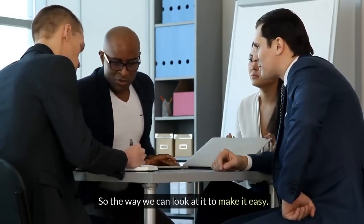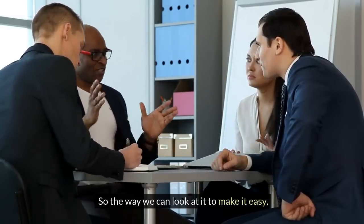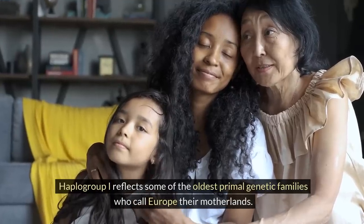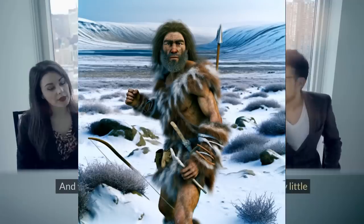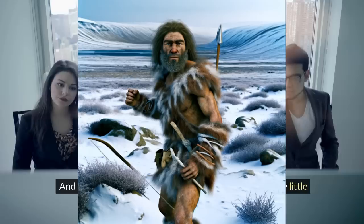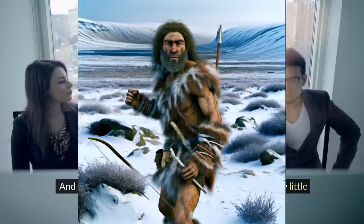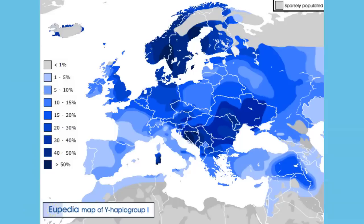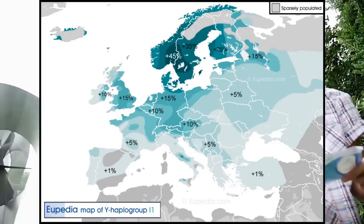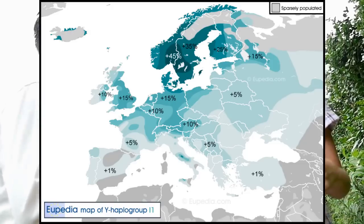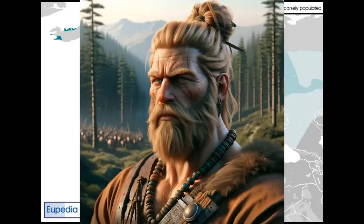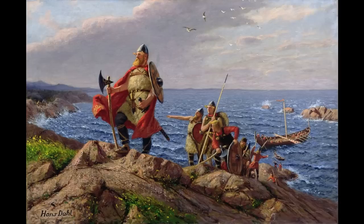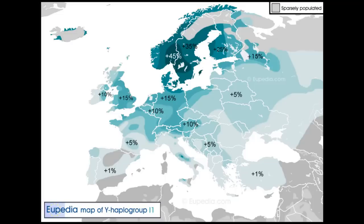To put it simply: haplogroup I reflects some of the oldest primal genetic families who called Europe their homeland — places with high haplogroup I have had relatively little mixing with other haplogroups over the millennia. Haplogroup I1, on the other hand, more closely reflects the Germanic and Norse peoples and their migrations over more recent history, roughly 2,000 to 4,000 years ago.